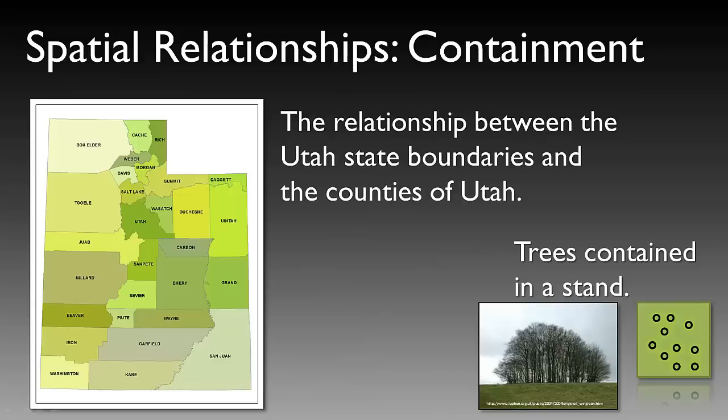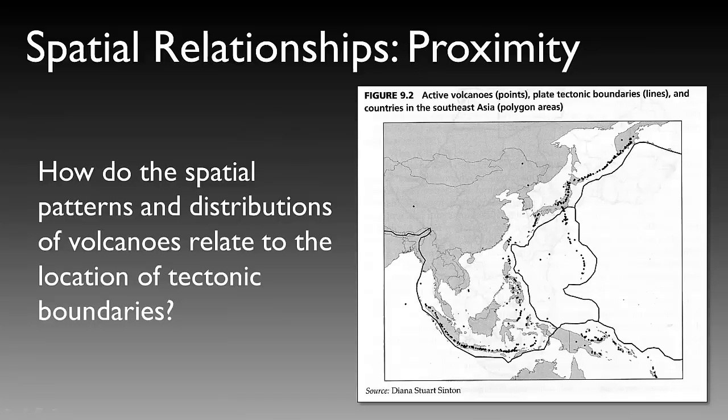As an example of spatial relationships, let's consider containment. The relationship between the Utah State boundary and the counties of Utah identifies that each one of those counties is contained within the greater boundary of the state of Utah. Another example can be trees contained within a stand.